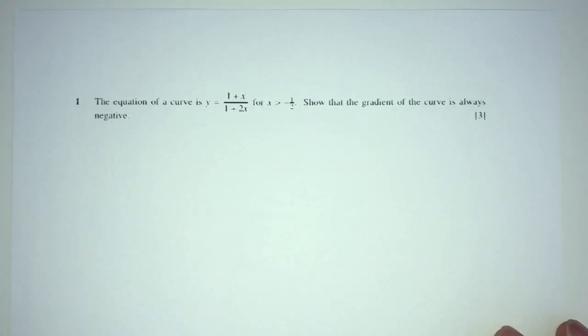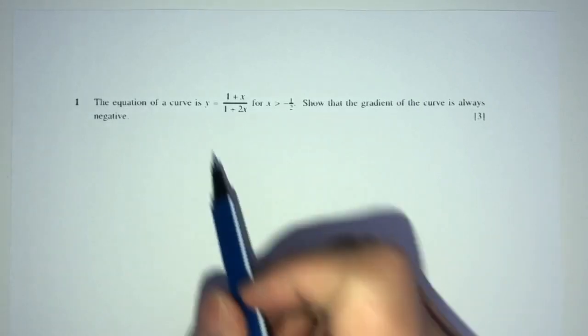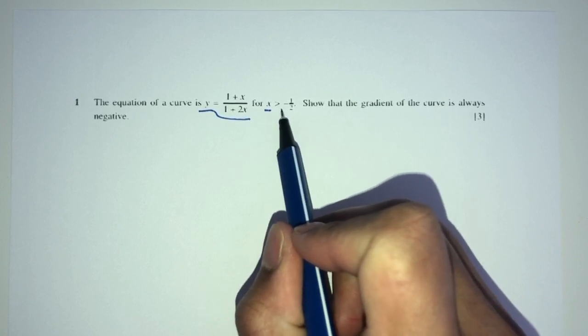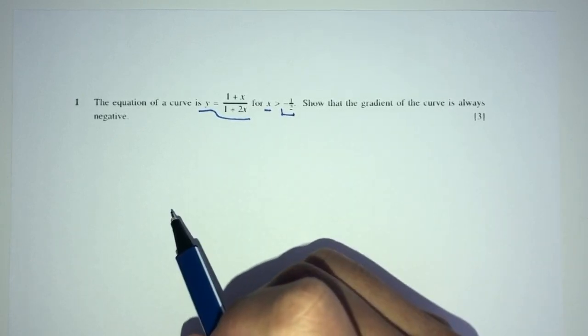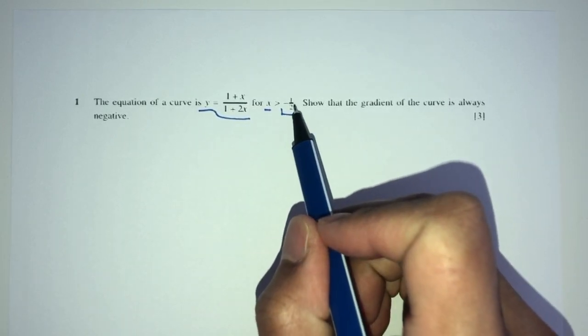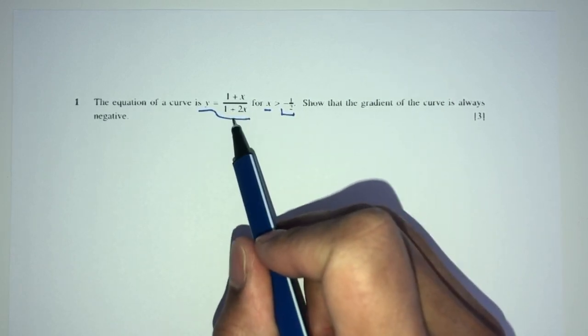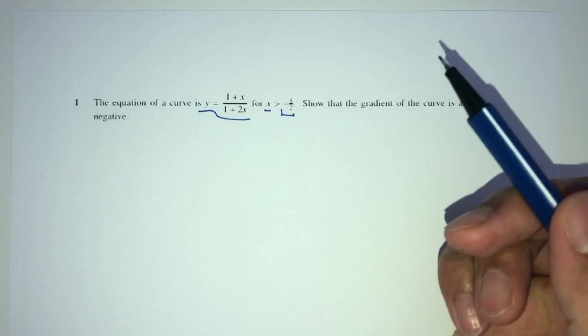Let's move on to question number one. Here we have the equation of y equal to this thing over here. Now, this one is a fraction for x, which is more than negative half. Why is it more than negative half? If you realize, if you put this value equal to half, it will become 0, and you cannot divide by 0.